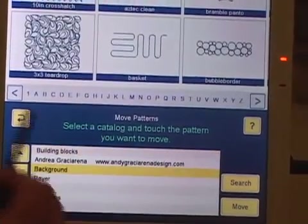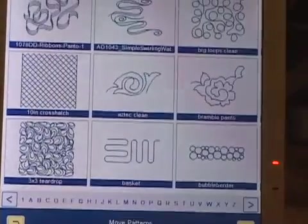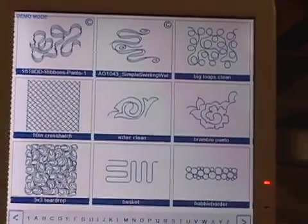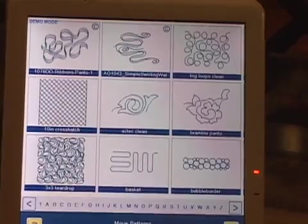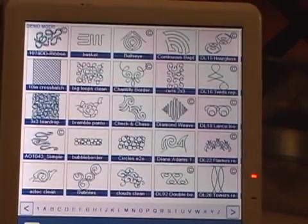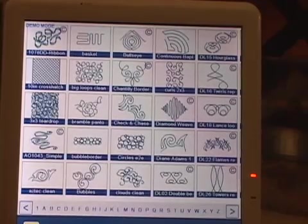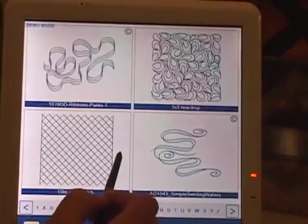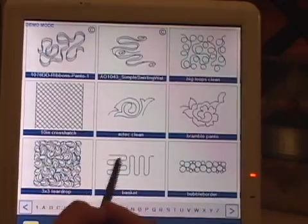I'm going to go here to my background catalog. At the moment I can see nine thumbnails per page, which was the standard up until this new version of IQ. If I want to see more patterns in my catalogues, if I sweep the screen upwards, it reduces the size of the thumbnail so I can see more on the screen. If I want to see less, then I sweep the screen downwards, and it will take me right down to one. Let's put it back to nine.